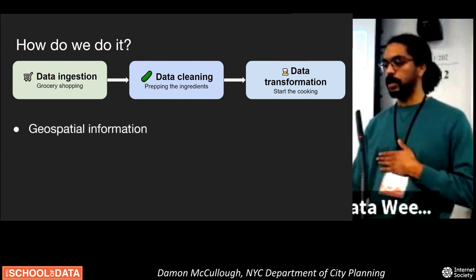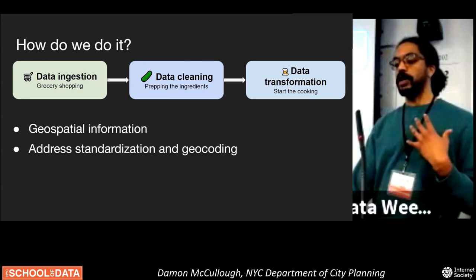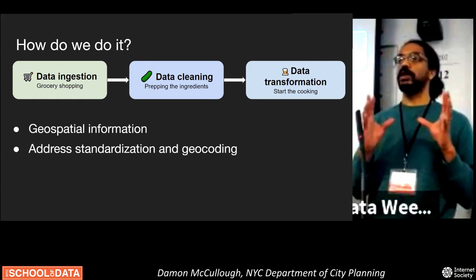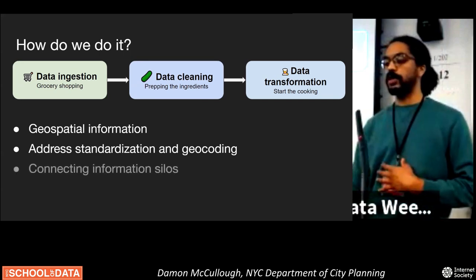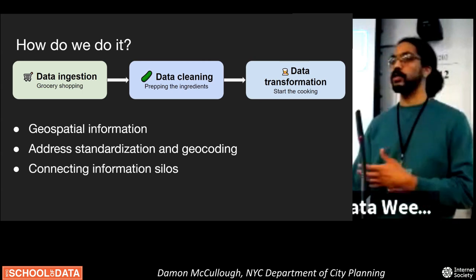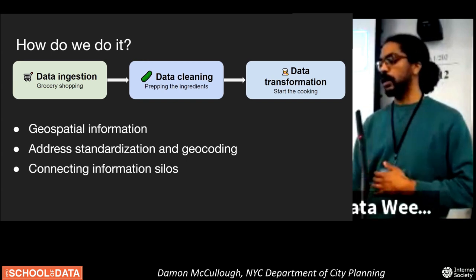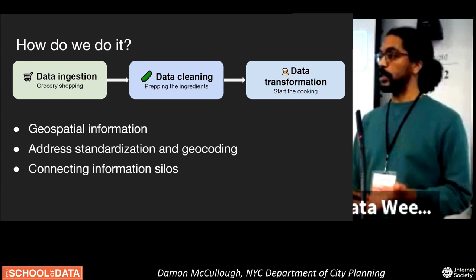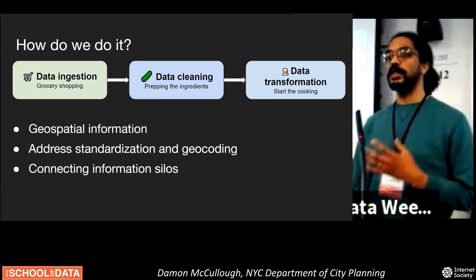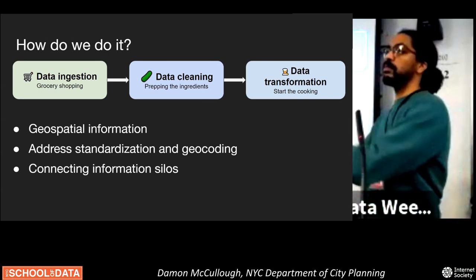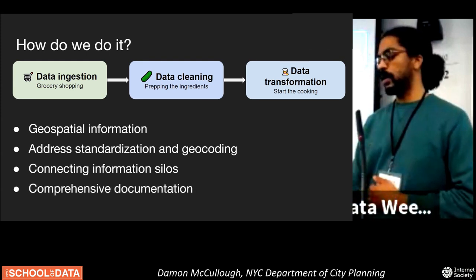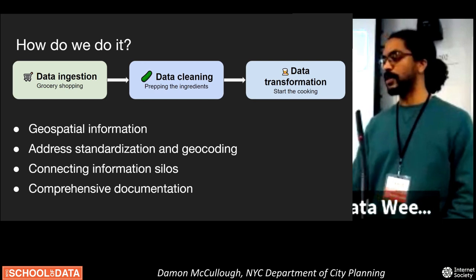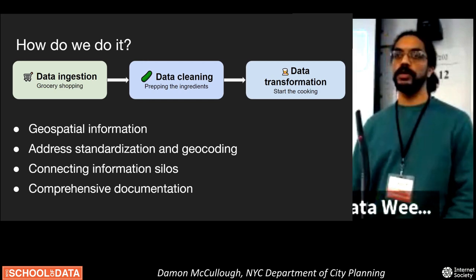With data ingestion, we are pulling in geospatial information. We are standardizing addresses in the cleaning and transformation process and geocoding — generally starting with text and trying to get coordinates, and especially trying to get shapes, whether polygons, lines, or points. Geocoding is going from information to a location and connecting information silos. A lot of the data we're ingesting comes from many different agencies and sources, and hopefully is simple to join together, but often is not. A lot of the standardization is meant to relate datasets to one another, to then hand off as more informative singular datasets, along with comprehensive documentation.